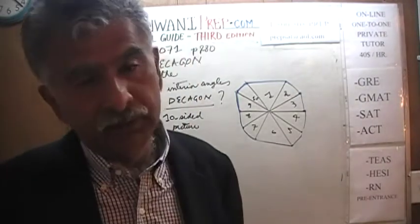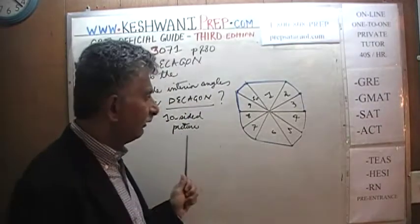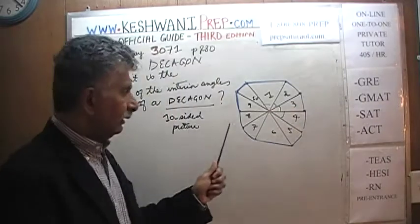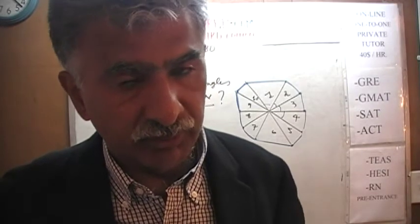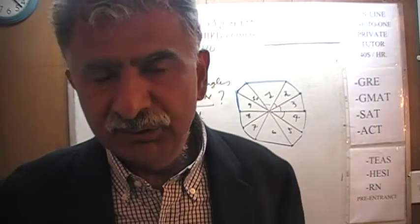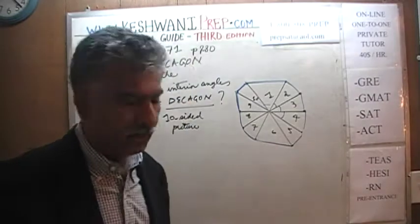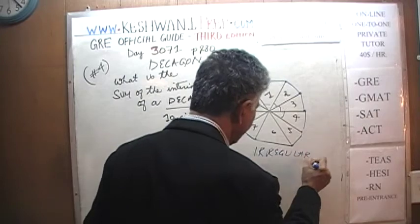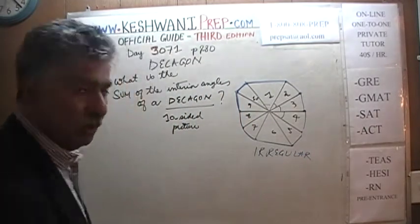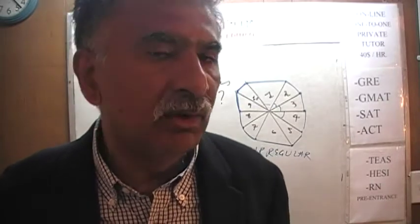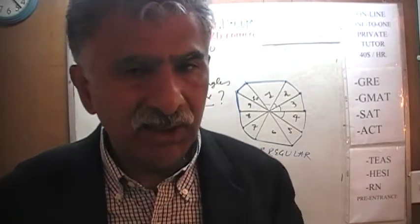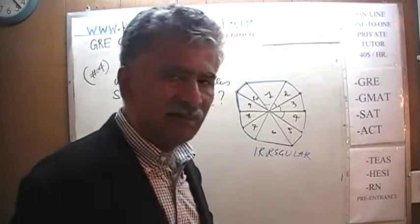As you can see, all ten sides are not equal in this decagon, and neither are the ten interior angles. This decagon is not regular. If I had drawn a symmetric decagon where all ten sides are equal and therefore all ten interior angles are equal, such a decagon is called a regular decagon. This is an irregular decagon — not symmetric. Right now all we need to understand is what a decagon is, which is simply a ten-sided figure.